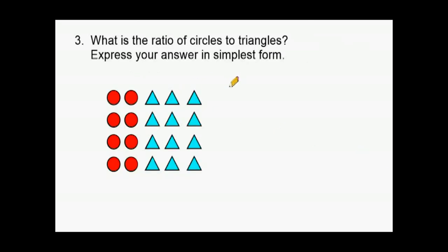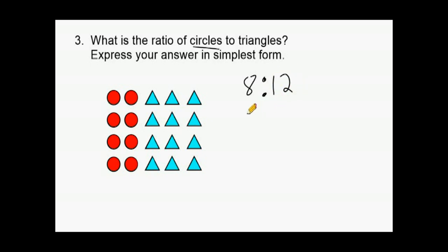In this problem, we have to determine the ratio of circles to triangles. We count the circles first — we have eight of them — and then we count the triangles, and we have 12 of them. A ratio of eight to 12 can be simplified to two to three, because four is the greatest common factor of eight and 12, so we divide four into each one of these numbers.